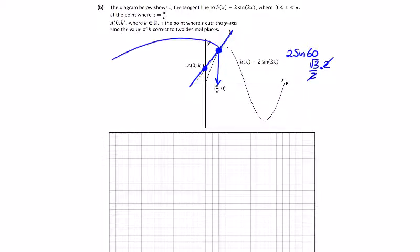So this point here is pi over 6. When we put x in for pi over 6, we get our y value to be root 3. So we have a point, and we've just got one missing value here.